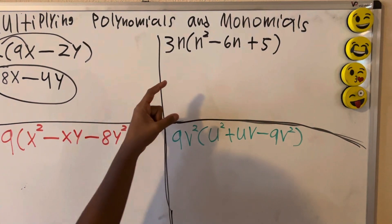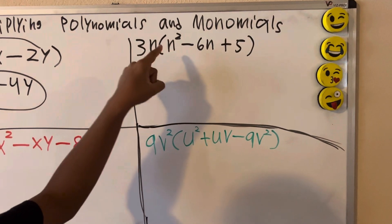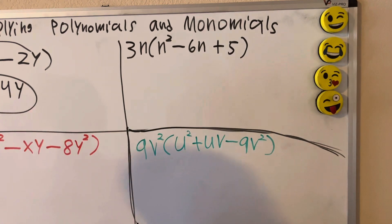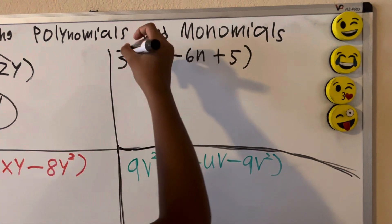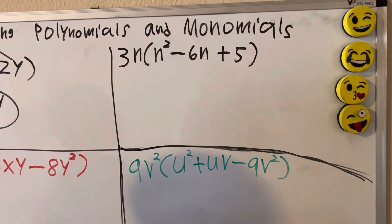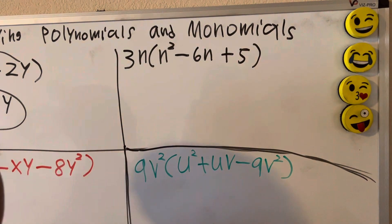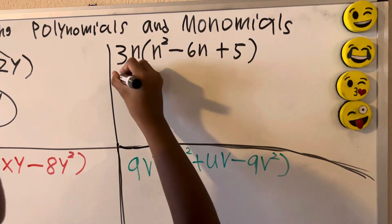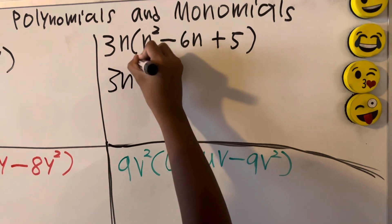Number 2, we have 3n times n squared minus 6n plus 5. Let's distribute this. 3n times n squared is nothing but 3n times n times n, which is 3n cubed.